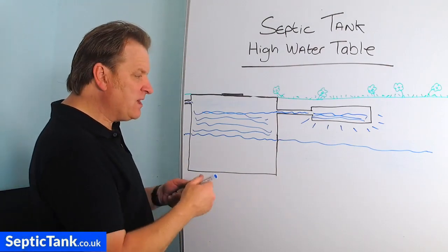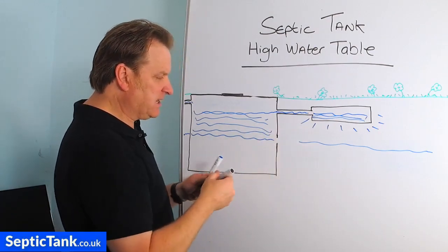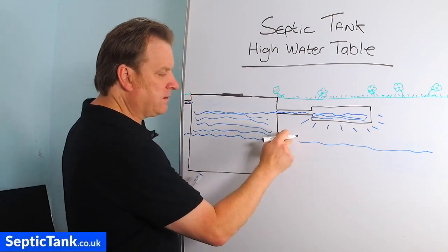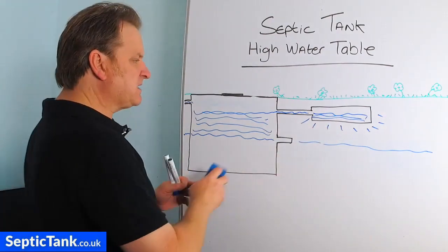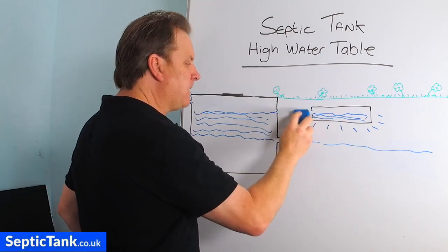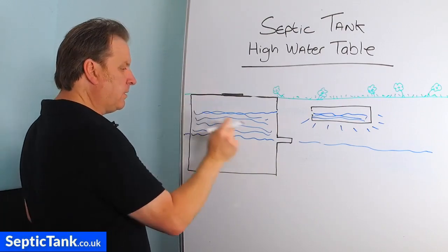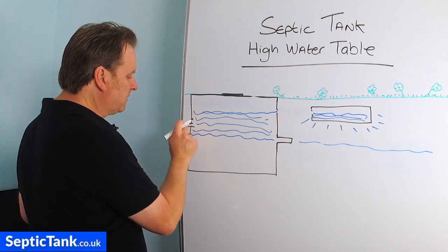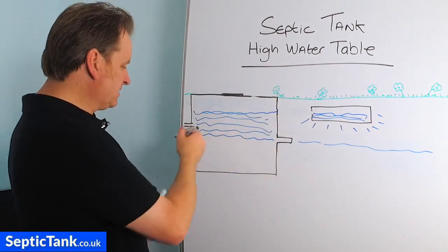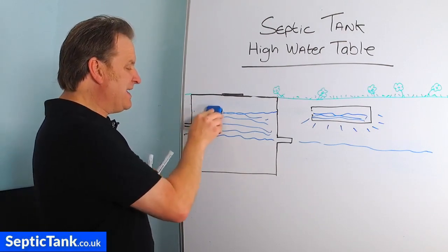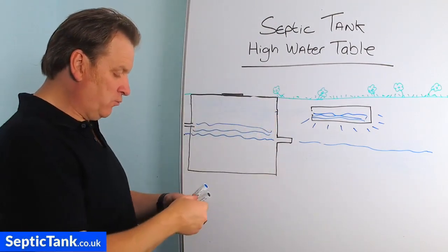What if you can't raise the level of the outlet pipe? Well, let's say the inlet pipe comes into the tank quite low — if the inlet is there, you obviously can't have the outlet pipe higher than the inlet, because the water will just back up towards your house. Everything works via gravity, so that won't work. So what do you do if you can't raise the height of your outlet pipe?